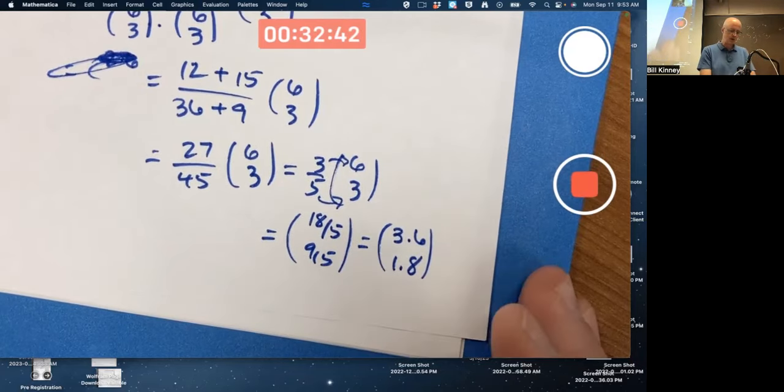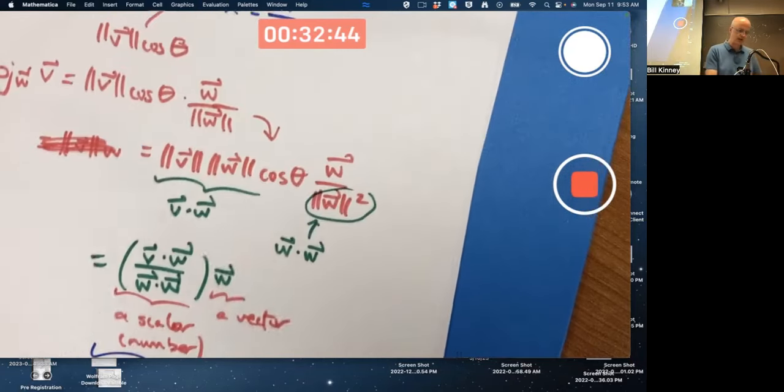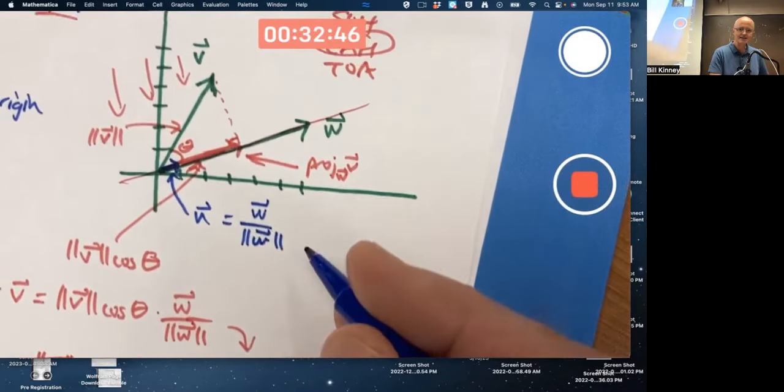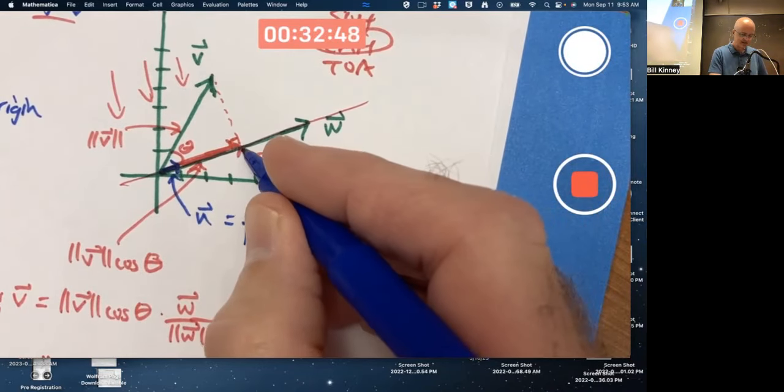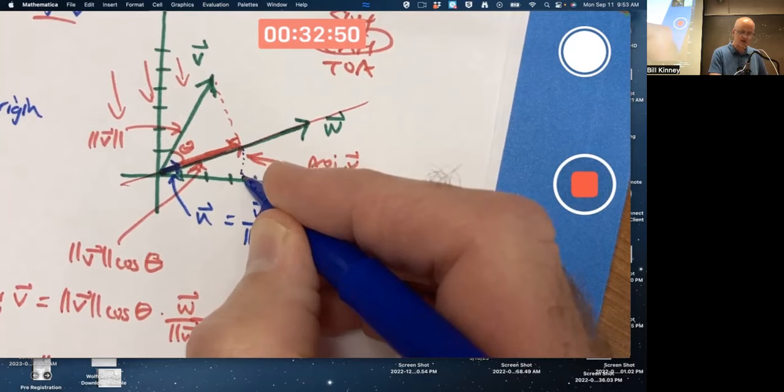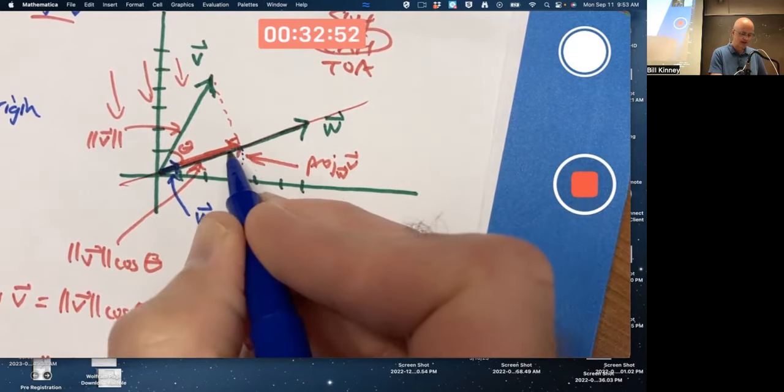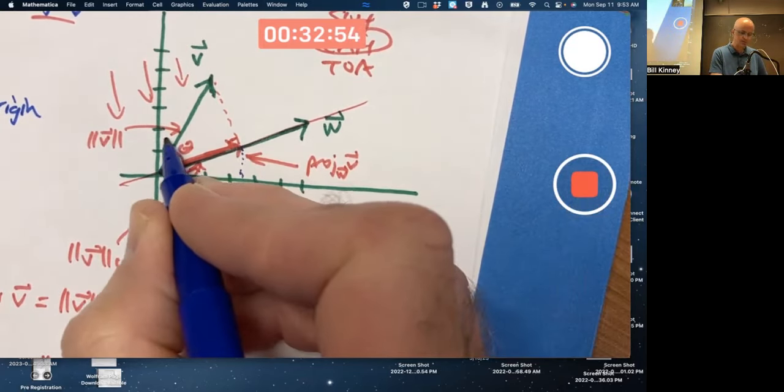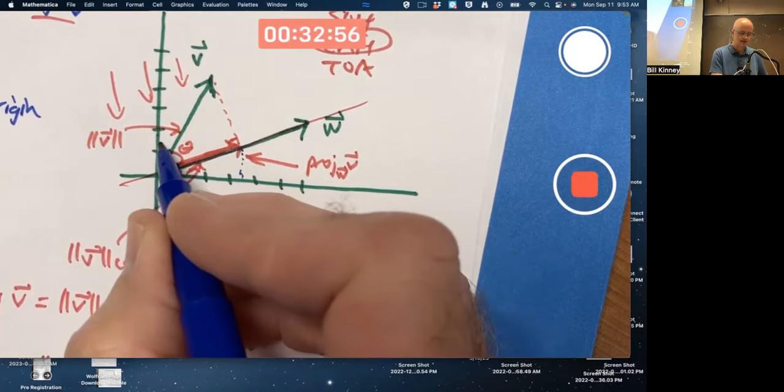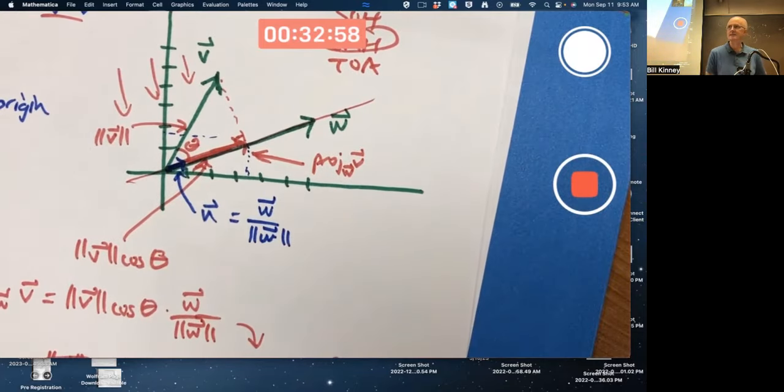Then you can see if it seems about right. Look at the picture. 3.6, 1.8. It'll look about right. 3.6. Yeah, with a little bit of fudging. 1.8. Yeah, with a little bit of fudging. My drawing's not perfect. Seems somewhat reasonable.